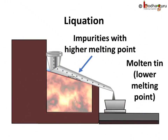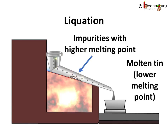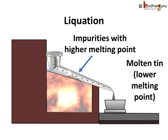What about metals with low melting point? Metals with very low melting points are made to flow on a sloped surface. In this case, the solid impurities with high melting points are left behind on the slope. This process is called the liquation process.